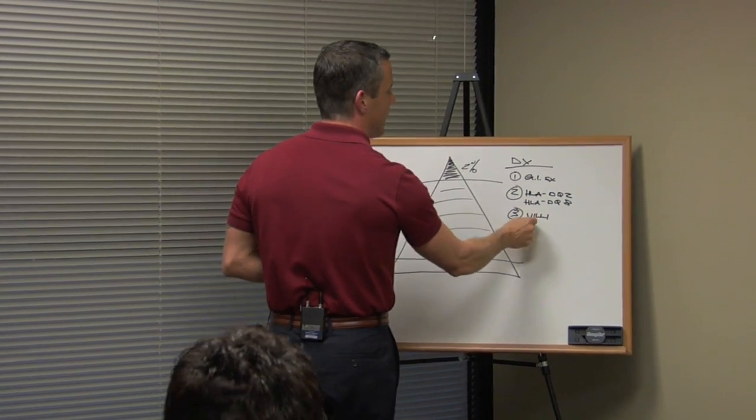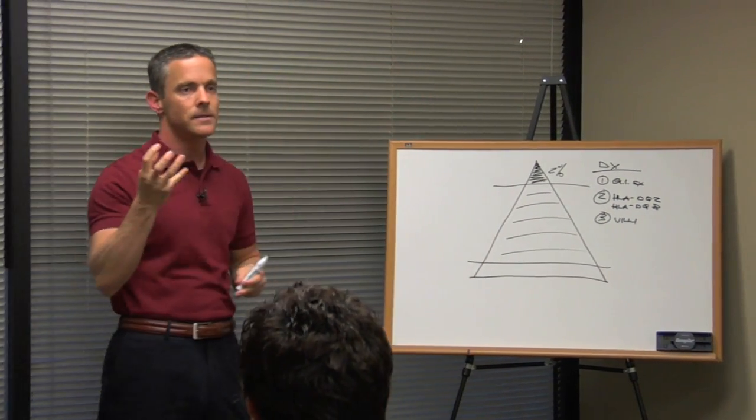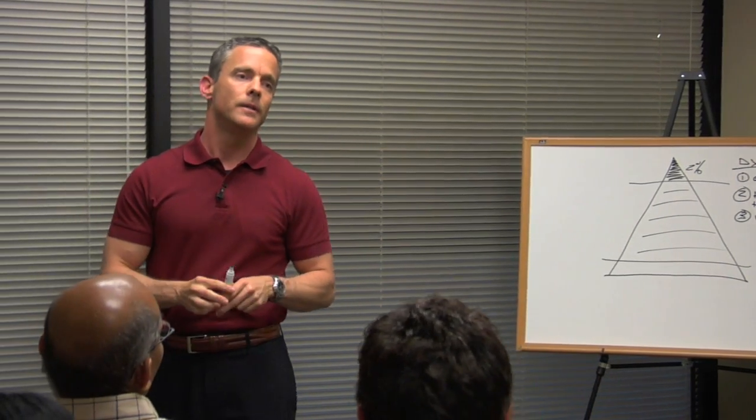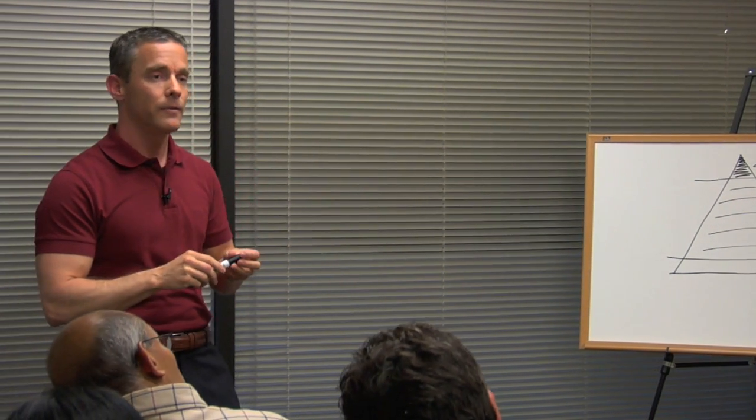The villi have to be atrophied, actually decreased in size, and there has to be inflammation and basically breakdown of the tissue.